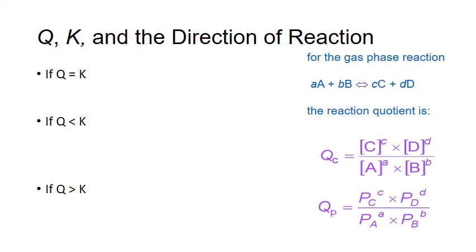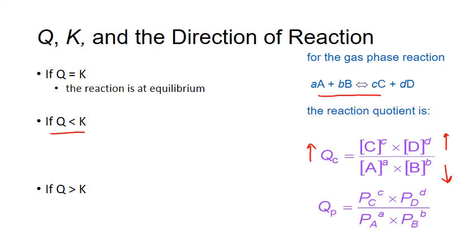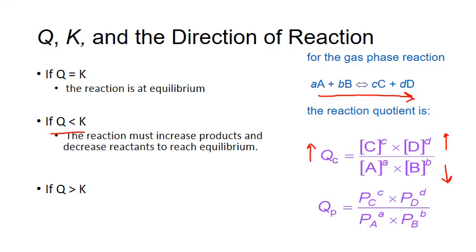If Q equals K, then the concentrations we used must have been the equilibrium concentrations, and our reaction is already at equilibrium. If Q is less than K, the reaction will proceed until Q increases to equal K. To increase Q, we need to increase the numerator and decrease the denominator — this happens when the forward reaction occurs more quickly, using up more reactants and producing more products. Another way of saying this is that the reaction will shift to the right, in the forward direction, until we reach equilibrium.